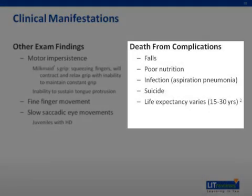Death in patients with Huntington's usually occurs when motor and cognitive deficits become more severe. Patients usually die due to complications of falls, poor nutrition, infection, or suicide. The common life expectancy from onset of symptoms is typically between 15 to 30 years.